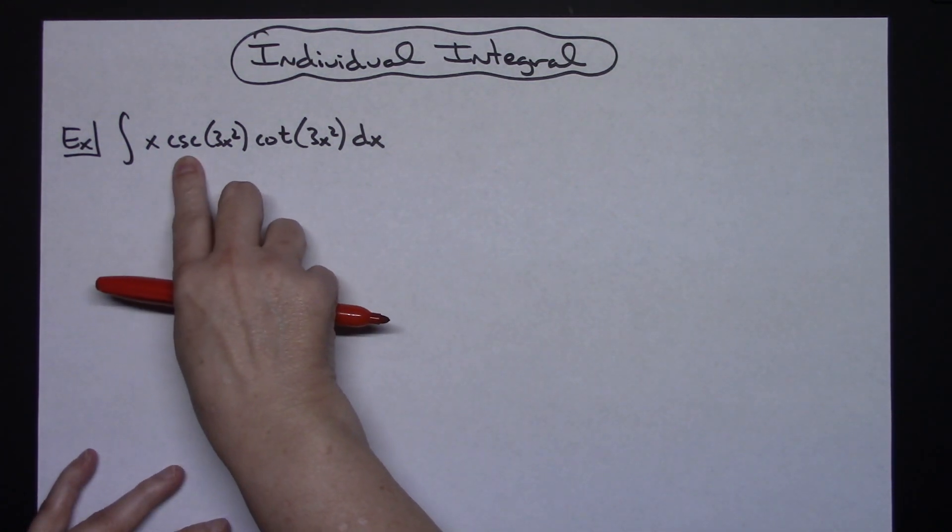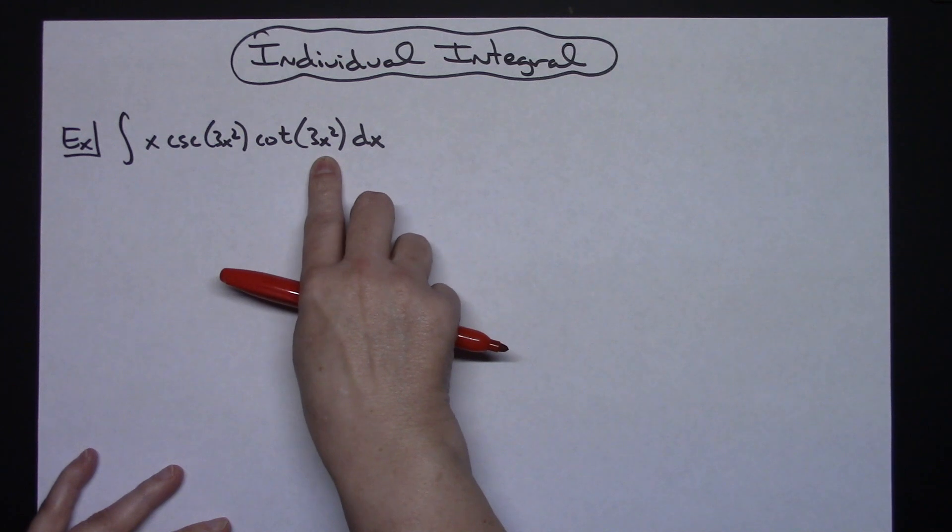We're going to integrate x cosecant of 3x squared cotangent 3x squared dx.